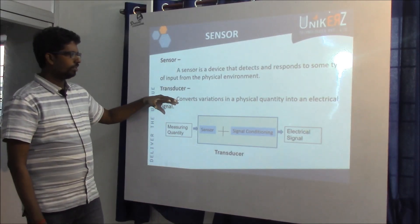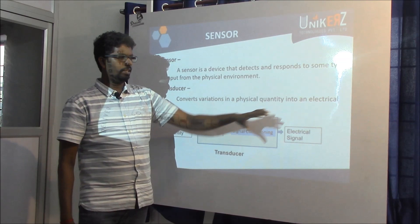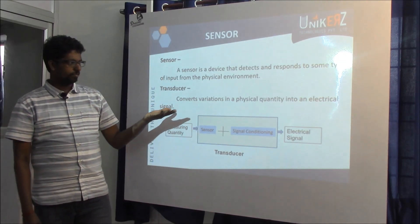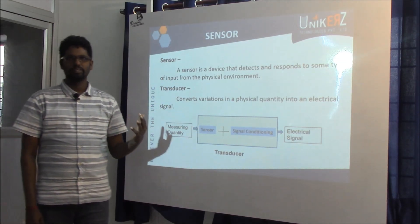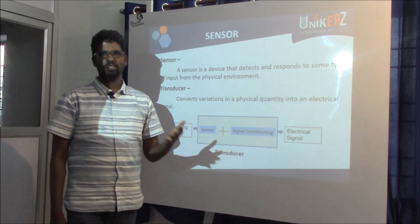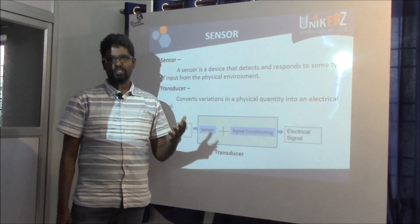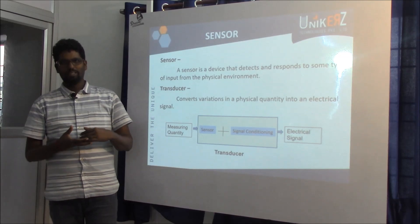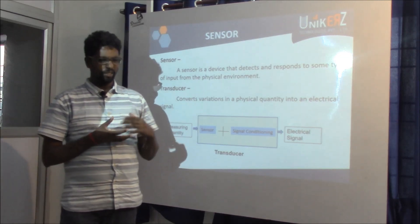In a transducer, the physical quantity — one terminology to mention — physical quantity means nothing but process variables. That is temperature, pressure, flow, level, weight — these are what we sense.